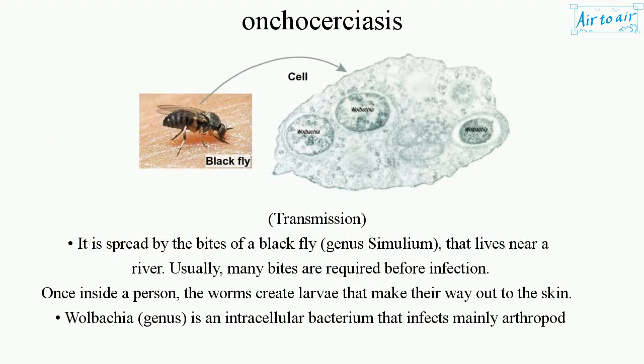Transmission. It is spread by the bites of a black fly, genus Simulium, that lives near a river. Usually, many bites are required before infection. Once inside a person, the worms create larvae that make their way out to the skin.